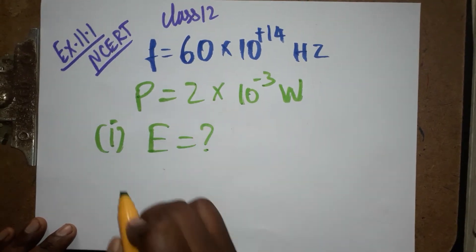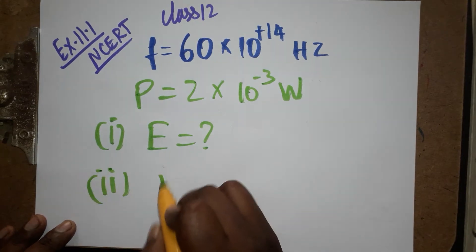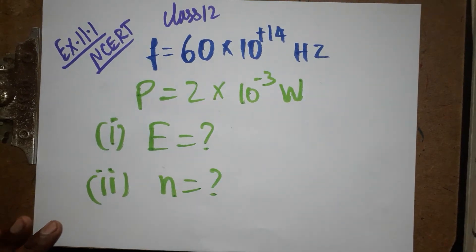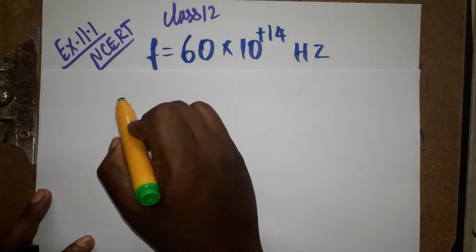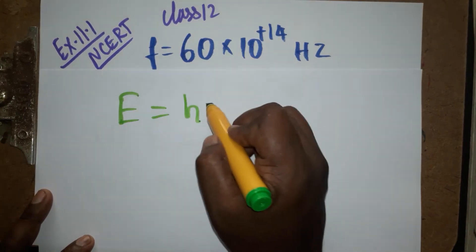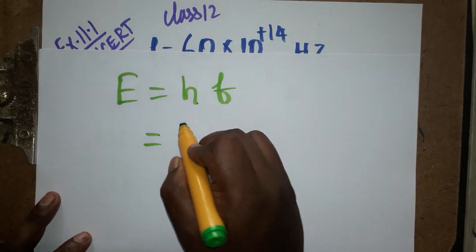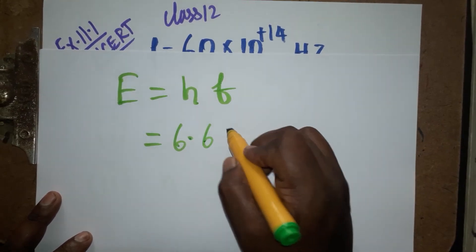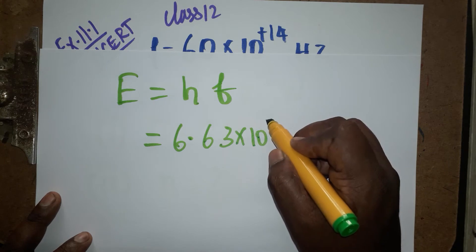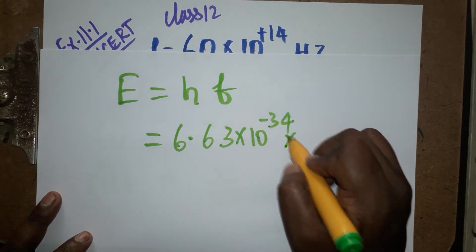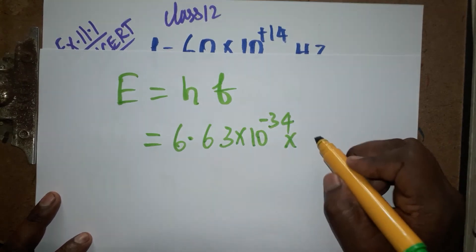The first question is what is the energy, second question is number of photons emitting. Energy is equal to hf. h is Planck constant, f is frequency. Planck constant value is 6.63 into 10 power minus 34.